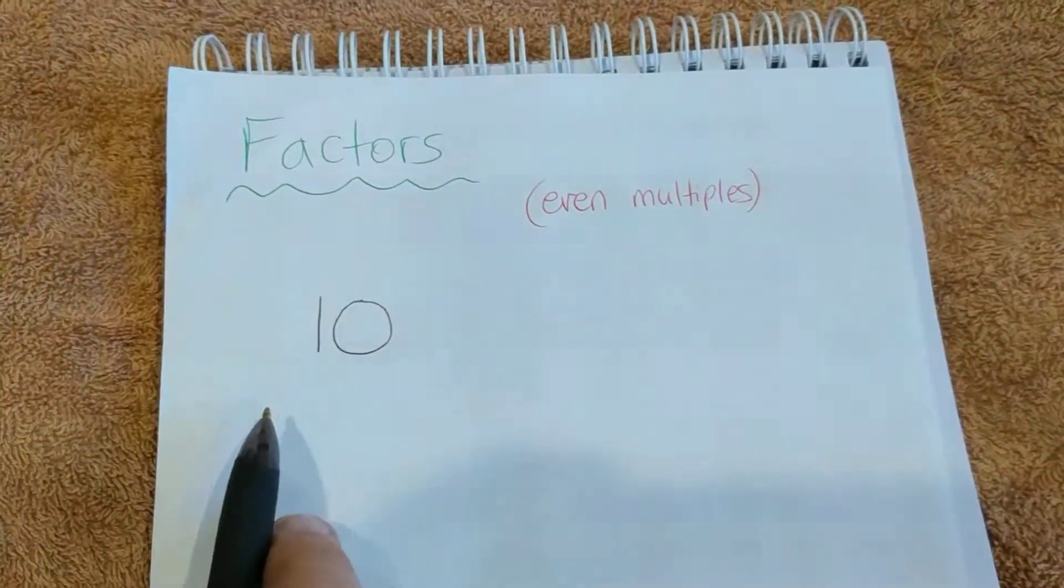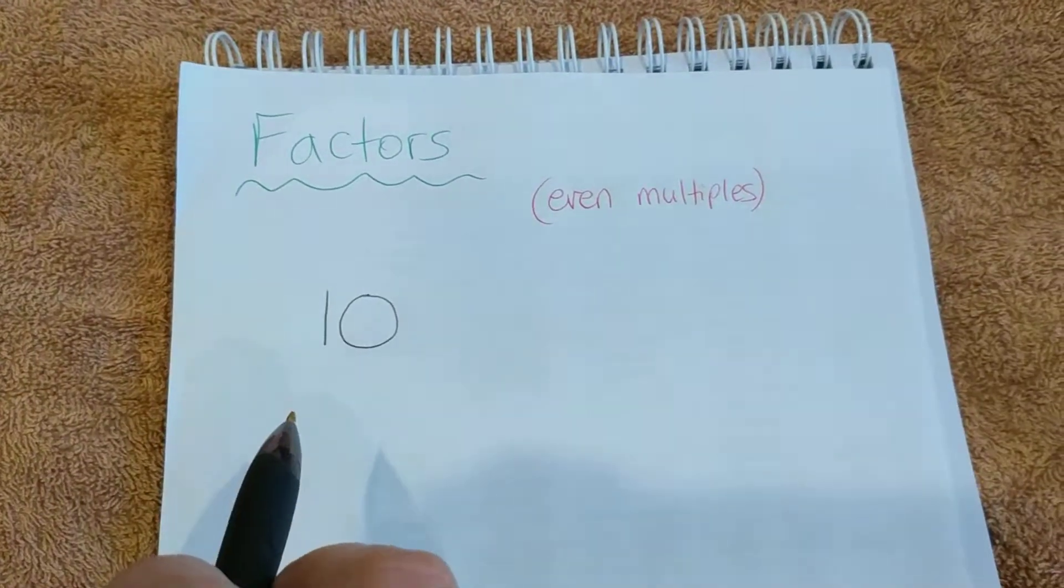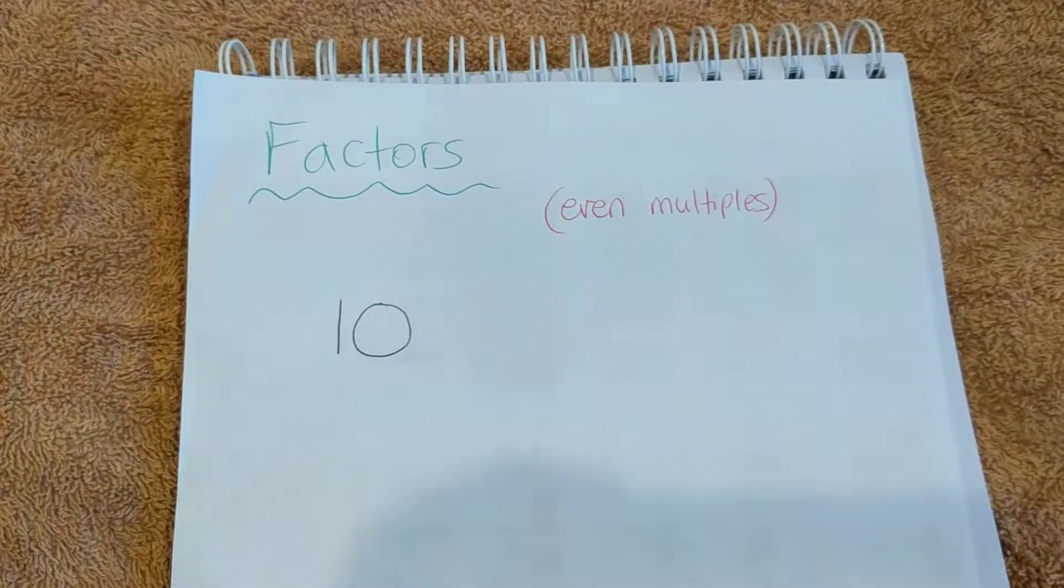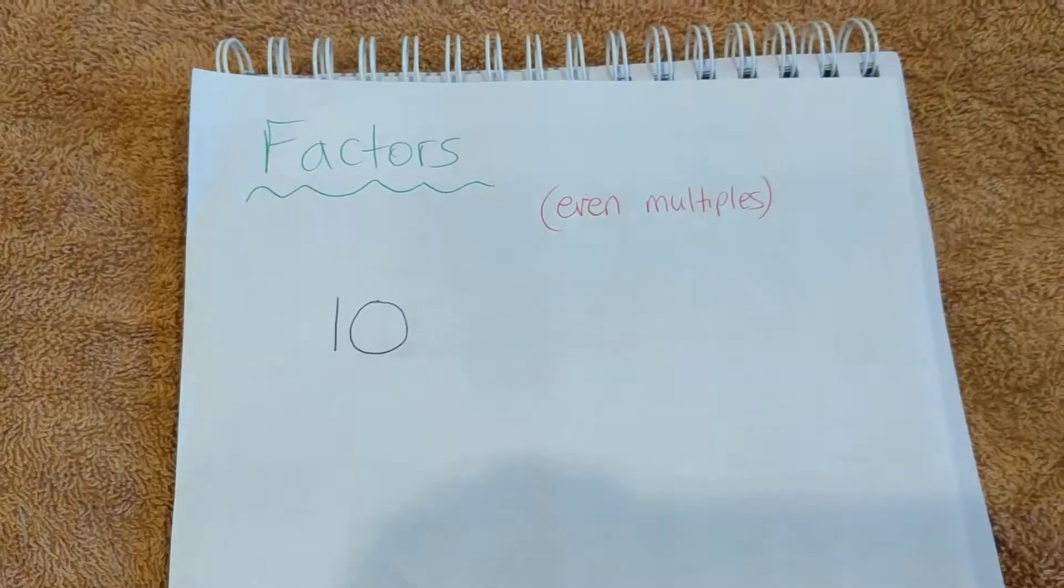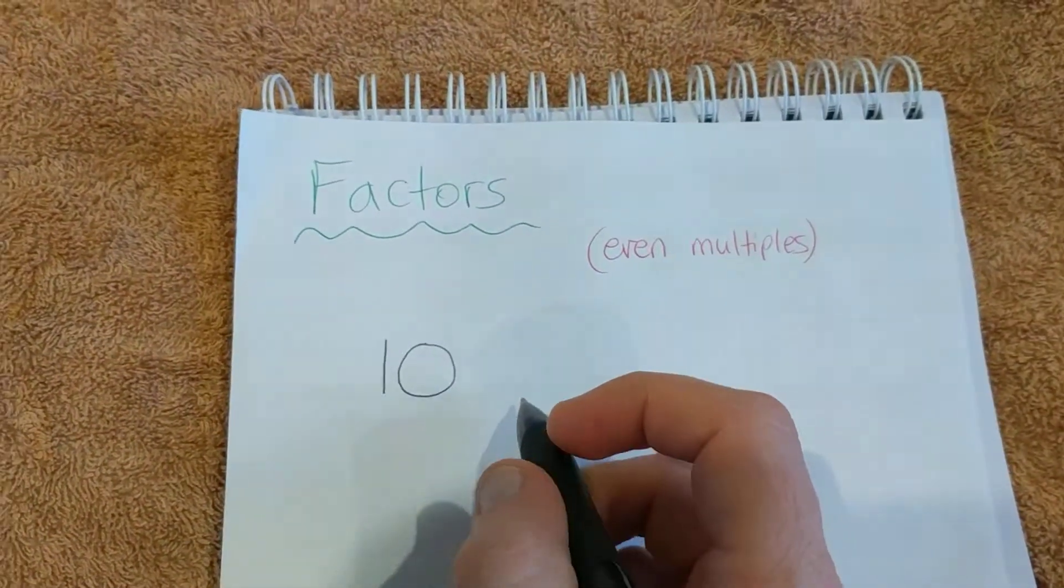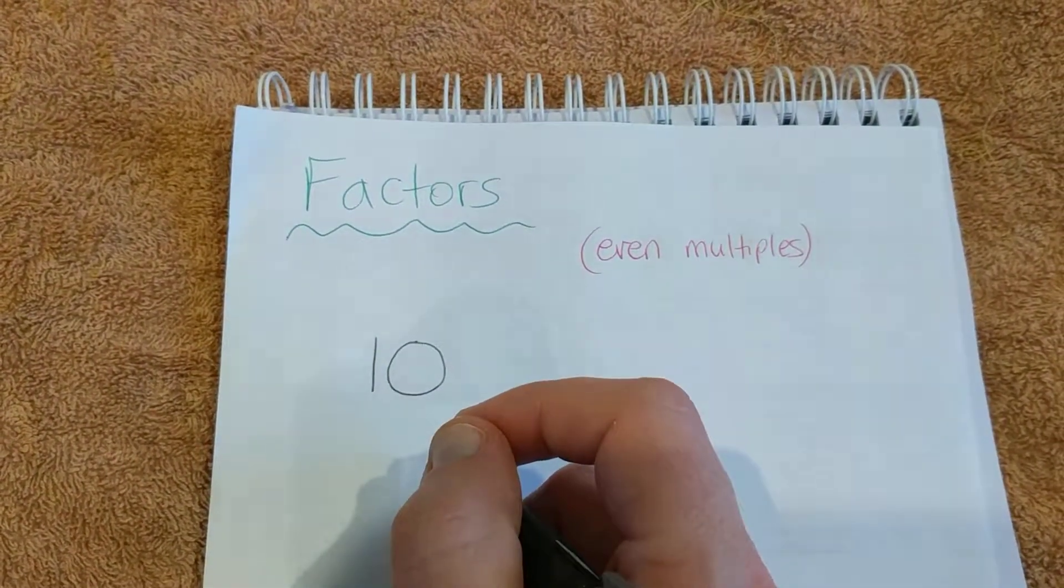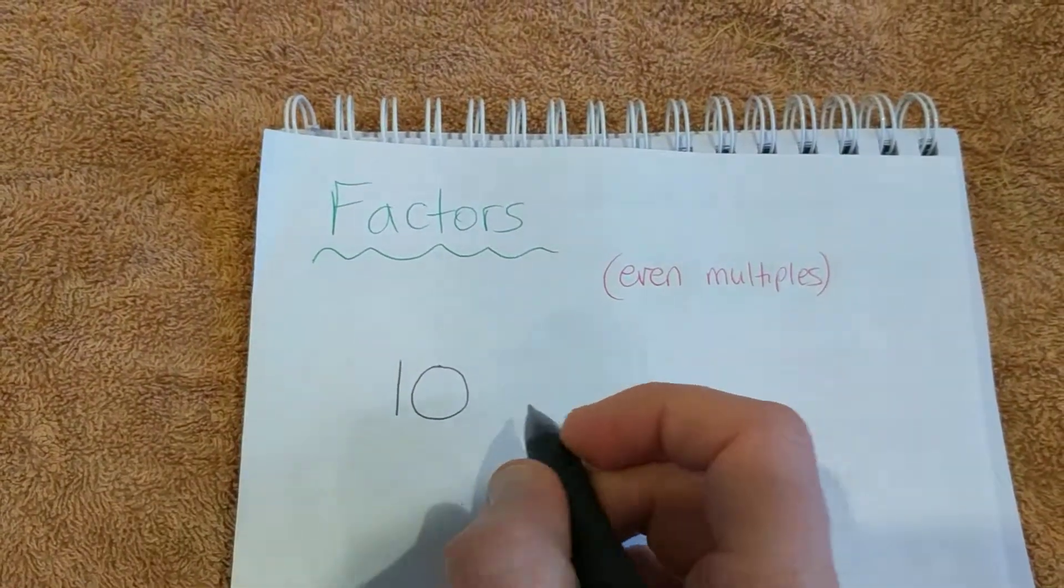So let's say we want to find out the factors for 10. We start with 1 - 1 can go into 10 ten times. So straight away, 1 is a factor, and 1 can pretty much go into any number 1 and above.